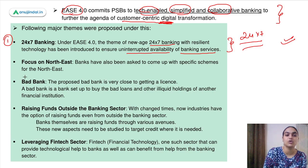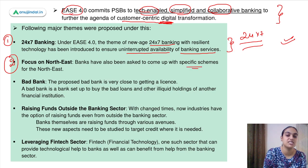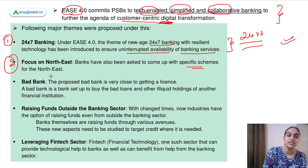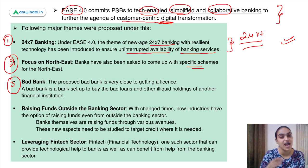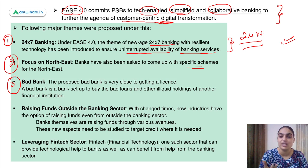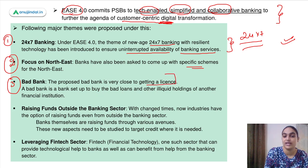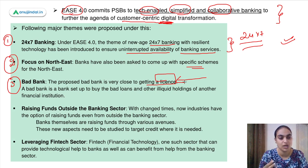The second focus is on the North-East region, where banks are required to come up with specific schemes to enhance access to banking services for people in the North-East. The third focus is on the bad bank — which will be taking up bad loans and helping in NPA recovery. The proposed bad bank is very close to getting a license, which will provide major support to the banking services sector.